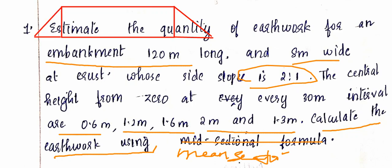The embankment is 120 meters long and 8 meters wide at crust. The side slope ratio is 2:1. For the triangular side portions, the base is s × d, where s is the side slope and d is the depth. So the base of the triangle equals s × d, and the side slope is given as 2:1.